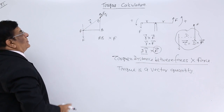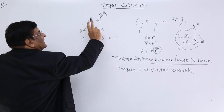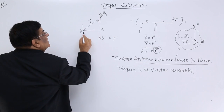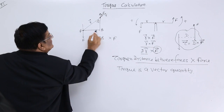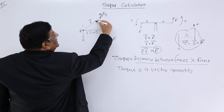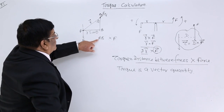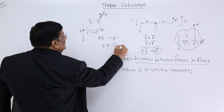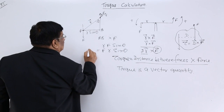This angle is also theta. Now if this length has magnitude r, by trigonometry this length is r cos theta and this length is r sin theta. We need not prove it again. AB upon r is perpendicular upon hypotenuse, that is sin theta, so this distance AB is r sin theta. With the force we are supposed to multiply AB, and this is r sin theta, so we write it r·F·sin theta. This is the magnitude of torque.